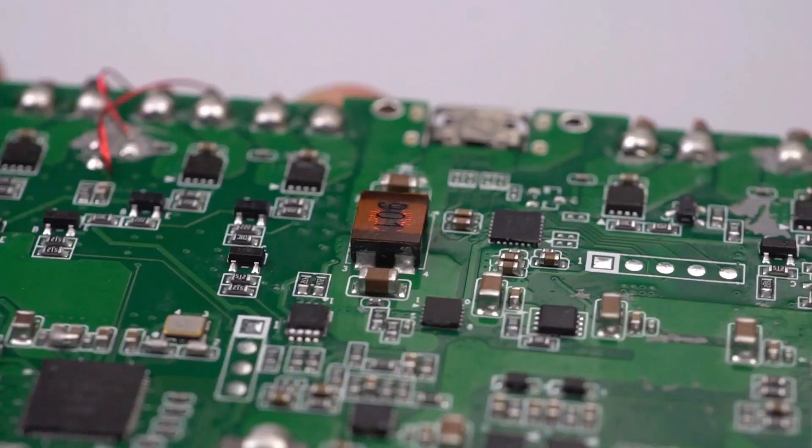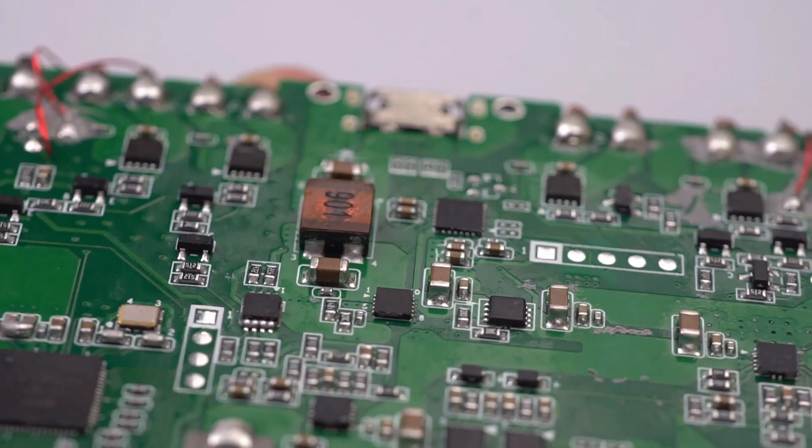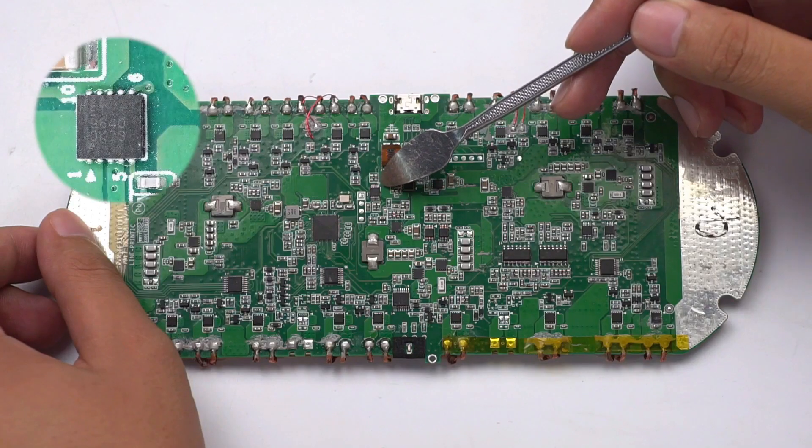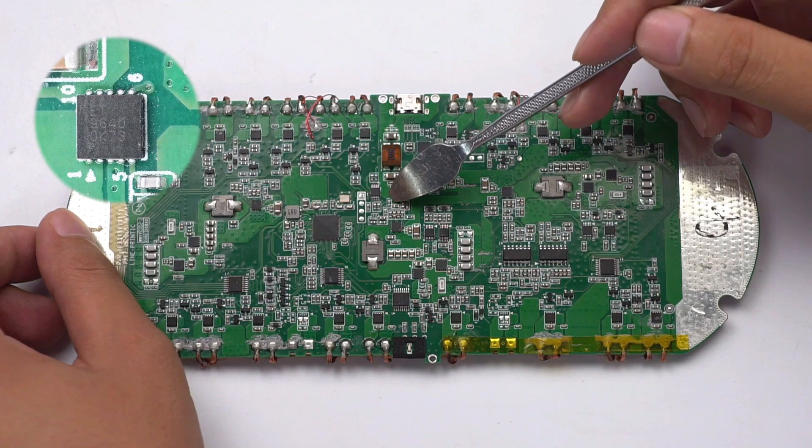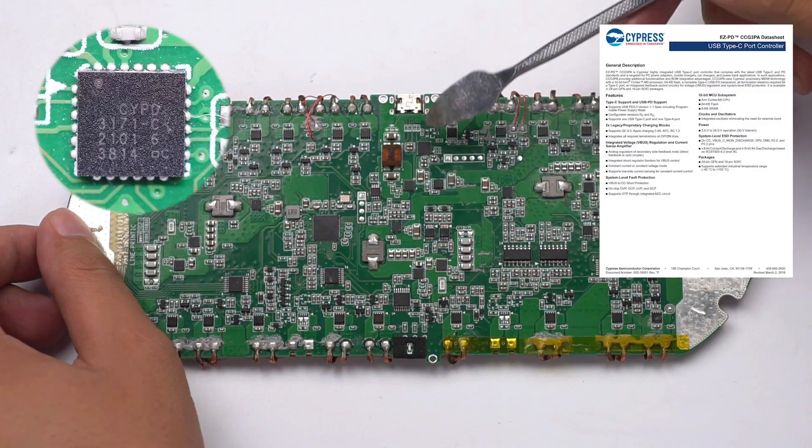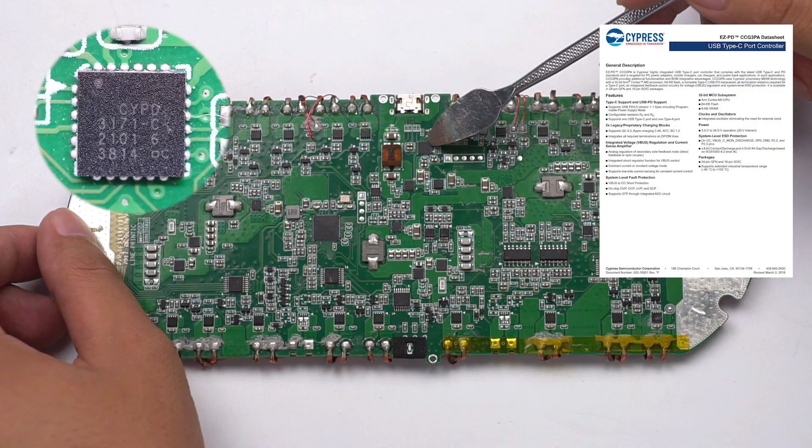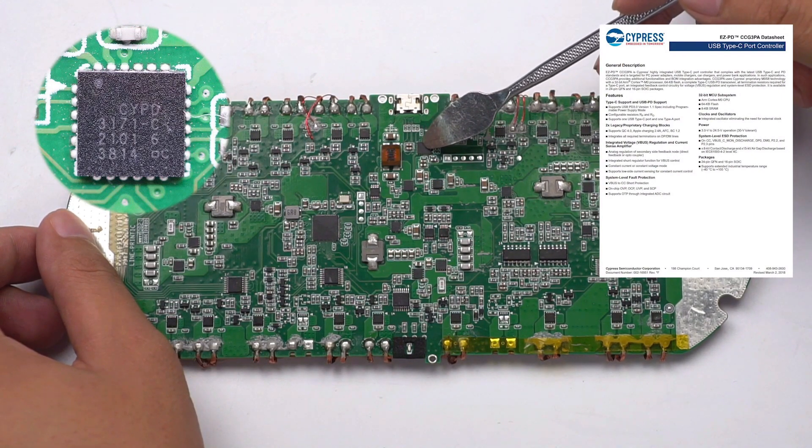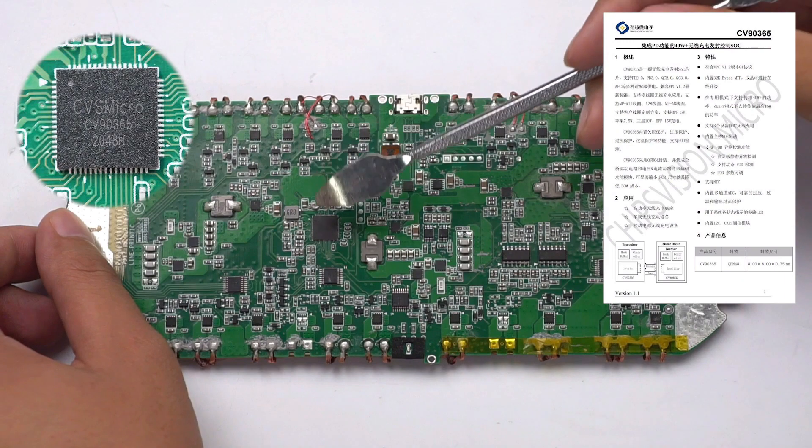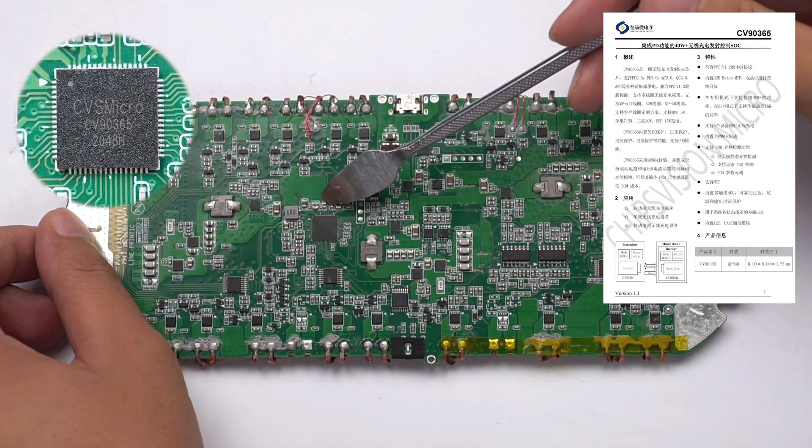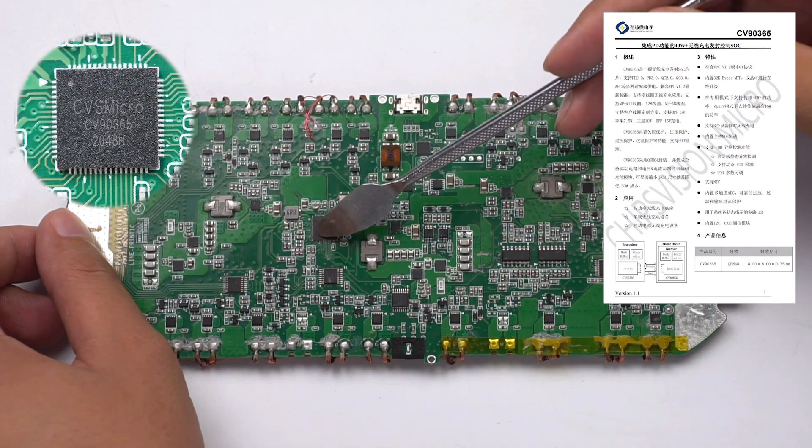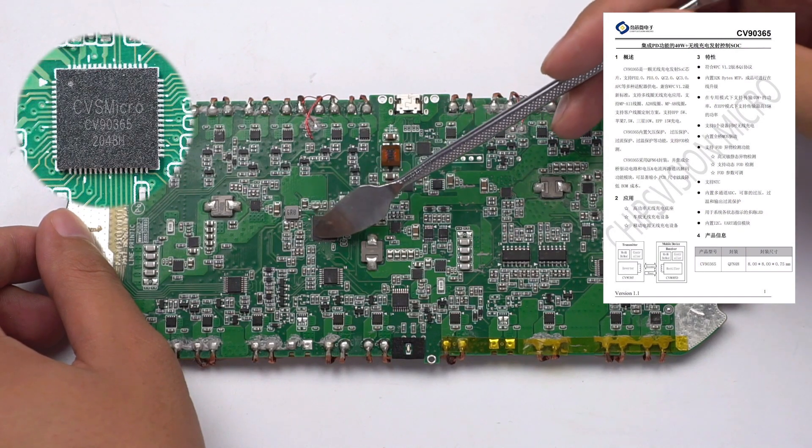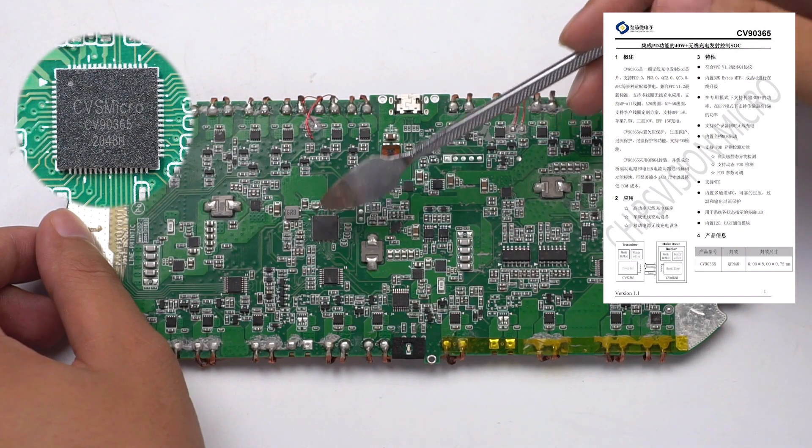This tiny thing is input filter inductor. And this is the protective IC, which used for input over voltage and over current protection. Here is the voltage controller of input interface from Cypress. Usually used for some high-end equipment. And this big chip is the main controller chip. Comes from Chips Vision CV90365, which can control multiple circuits.